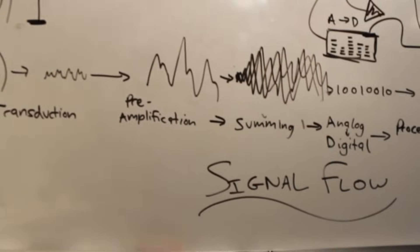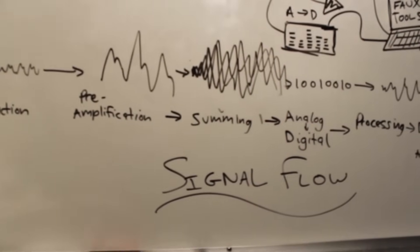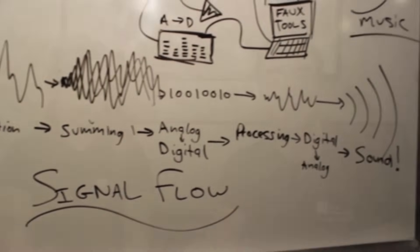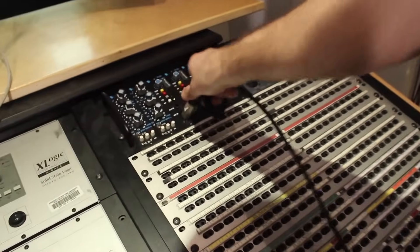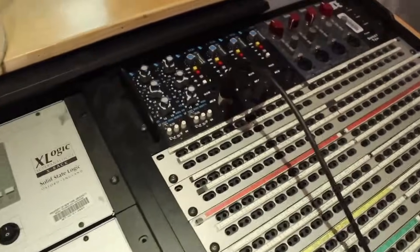First things first, you play or you sing into a microphone, which converts sound pressure waves into a voltage signal that can travel down a wire. Check out our previous video on transduction for more on how this works. From there, your signal travels along your XLR cable into your preamplifier. The preamp's job is to boost the extremely quiet signal from your microphone up to a level that the mixer can actually work with. Sometimes your preamps will be part of the mixer, sometimes they'll be separate.